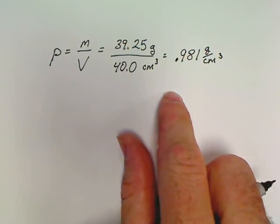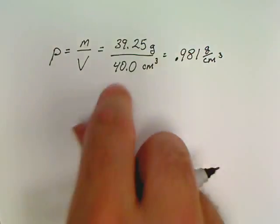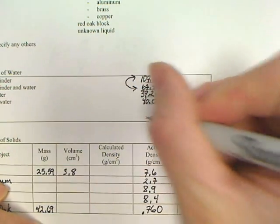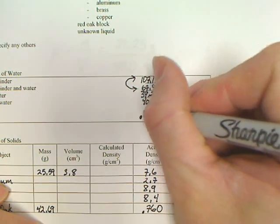So 39.25 divided by 40.0 equals 0.981 in sig figs for me, 0.981 grams per centimeter cubed. This is what it would look like on my calculations page. And on this sheet now, I could come back, 0.981.